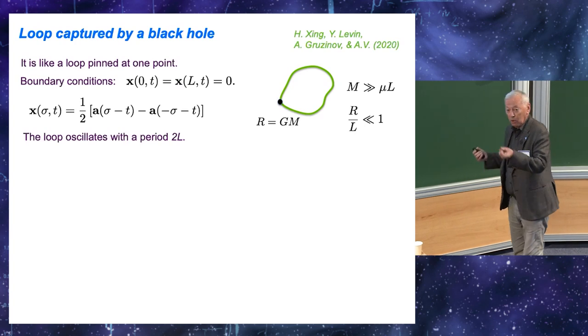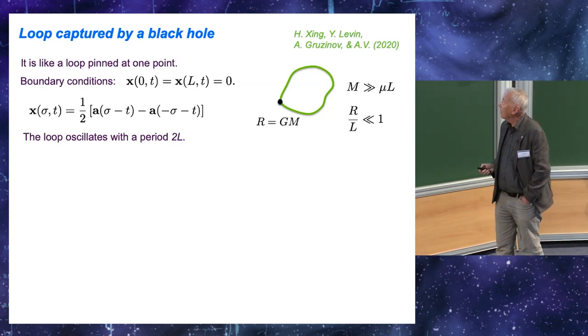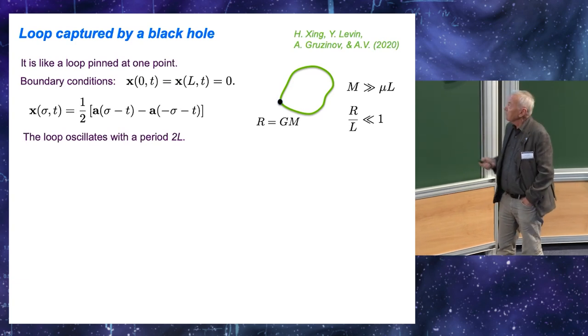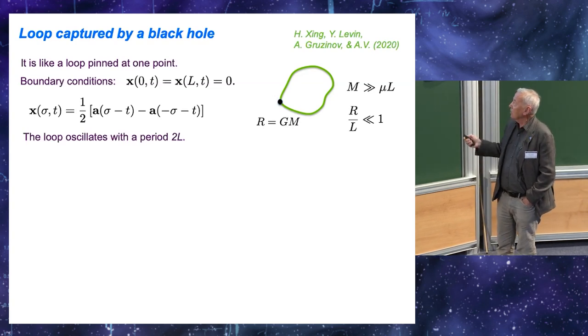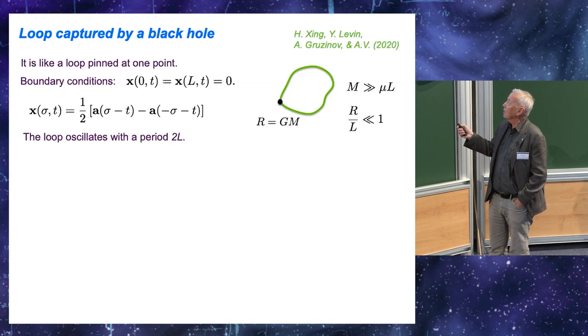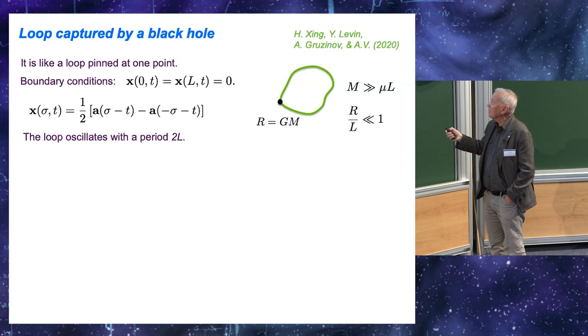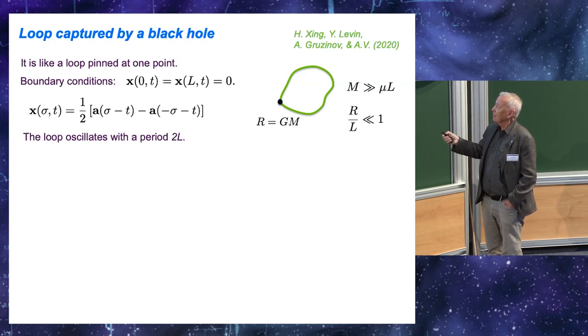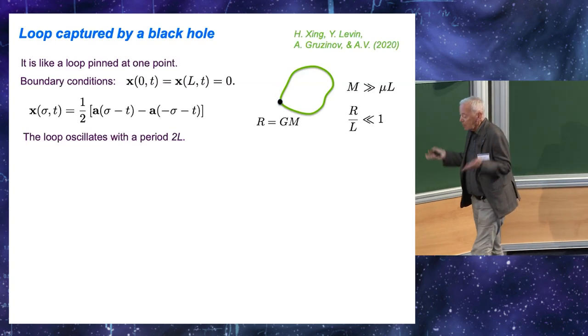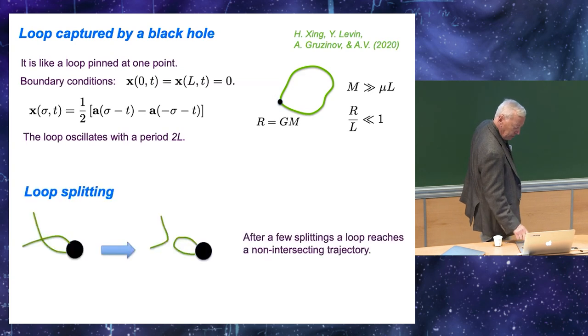Now, if a loop of string runs into a black hole by some part of it, it will be captured, like shown here. And we will be interested in the situation where the black hole is very small compared to the loop. So, the size of the black hole is about G m, where m is its mass. So, the loop is very large, but at the same time, the black hole is much more massive than the loop. In this situation, you can think of this location where the black hole is as a point where the loop is pinned. So, then you can just have to solve the Nambu-Goto equations of motion with boundary conditions that there is one point on the loop which remains fixed. And then the solution depends on one rather than two arbitrary functions, and it's given by this. And the loop oscillation period is changed. Now, it is two L rather than L over two, but so far there is not much different from the free loop.